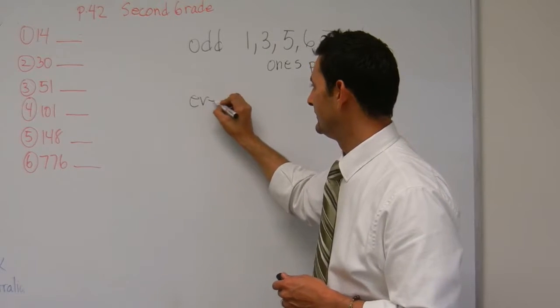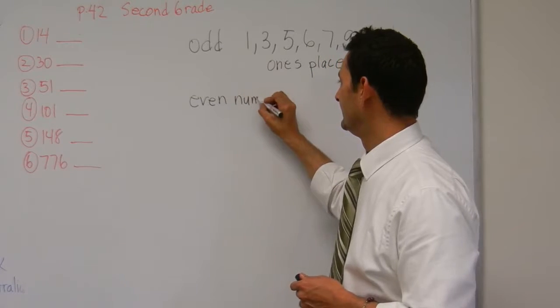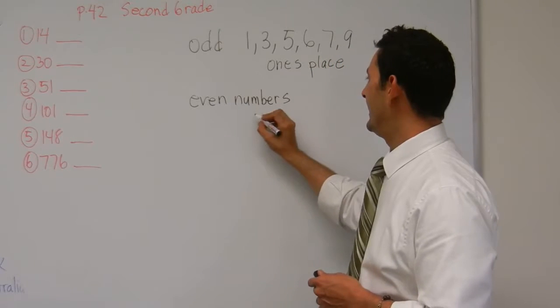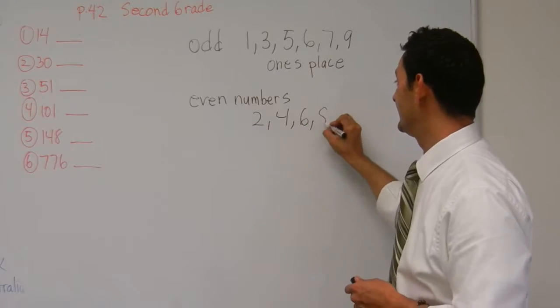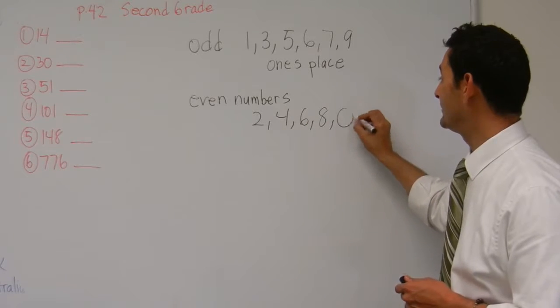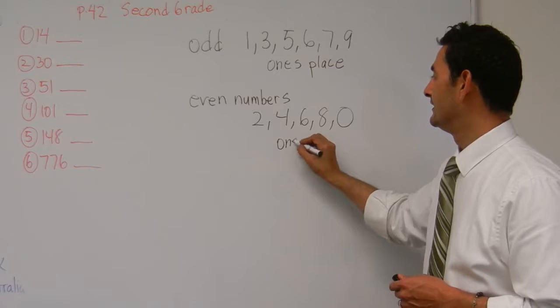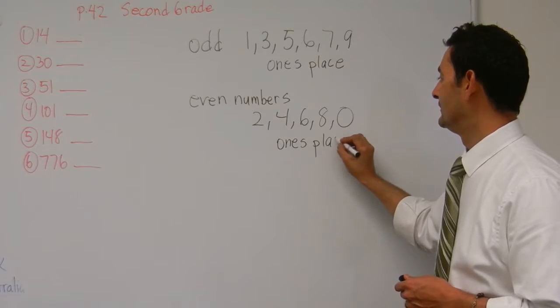Even numbers have a 2, have a 4, have a 6, have an 8, and have a 0 in the ones place.